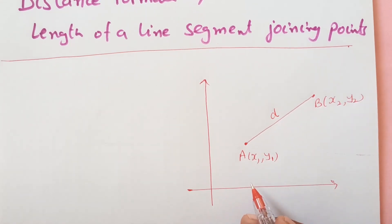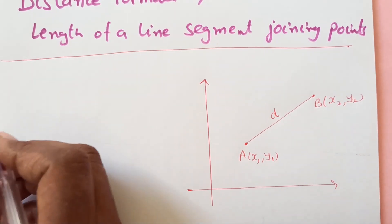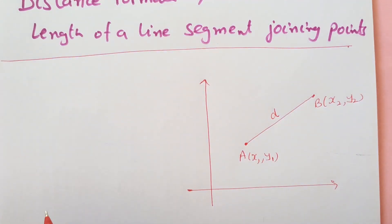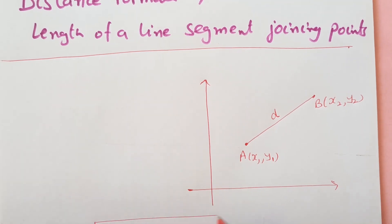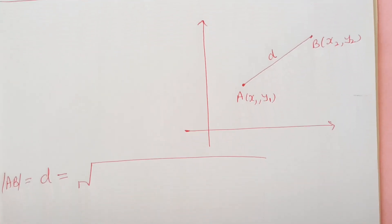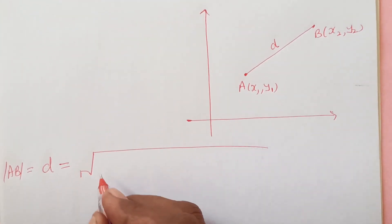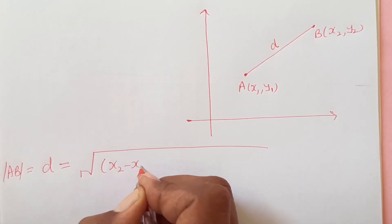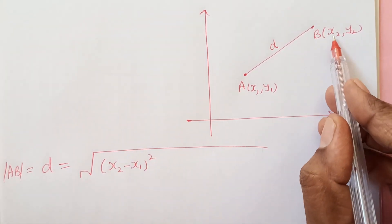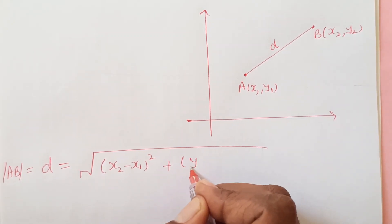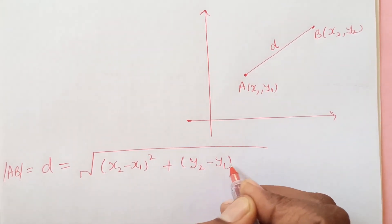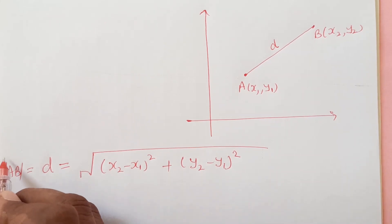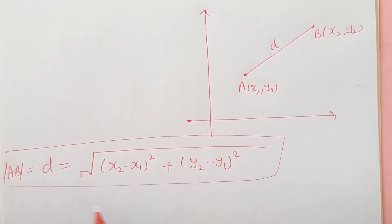Now, the formula that we have — the distance formula used for this — is that the length of AB, also denoted as |AB|, equals the square root of (x2 minus x1) squared plus (y2 minus y1) squared. This formula is called the distance formula and it is used to find out the distance of a certain line.